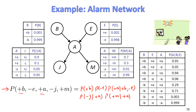Each term comes from one of the five CPT tables. P(+b) from the burglary table, P(-e) from the earthquake table, P(+a | +b, -e) from the alarm table with +b and -e, P(-j | +a) from John's table, and P(+m | +a) from Mary's table. Multiply all five values to get the joint probability.